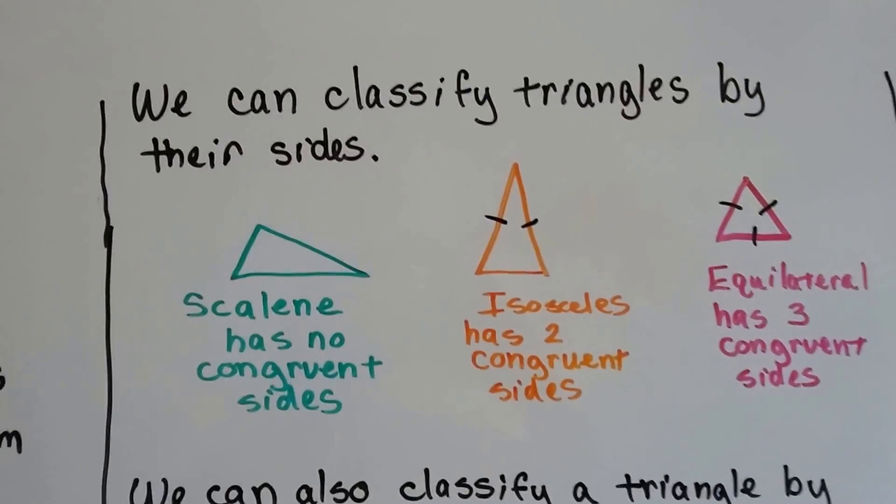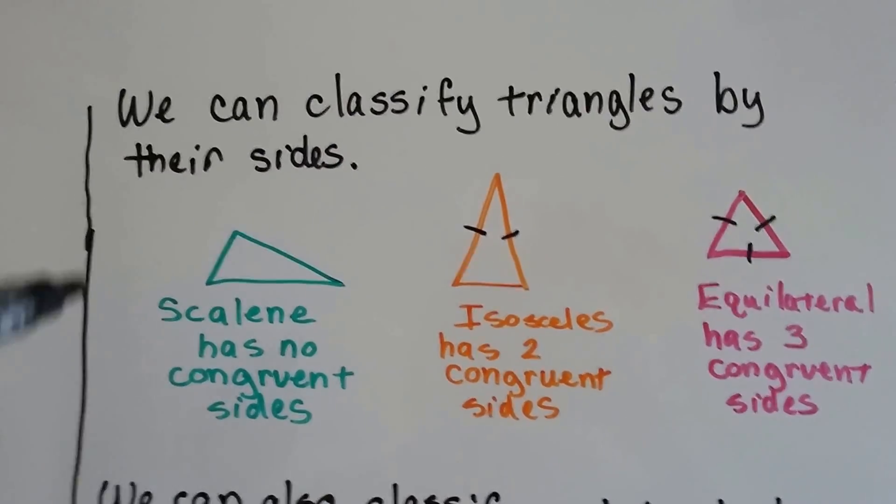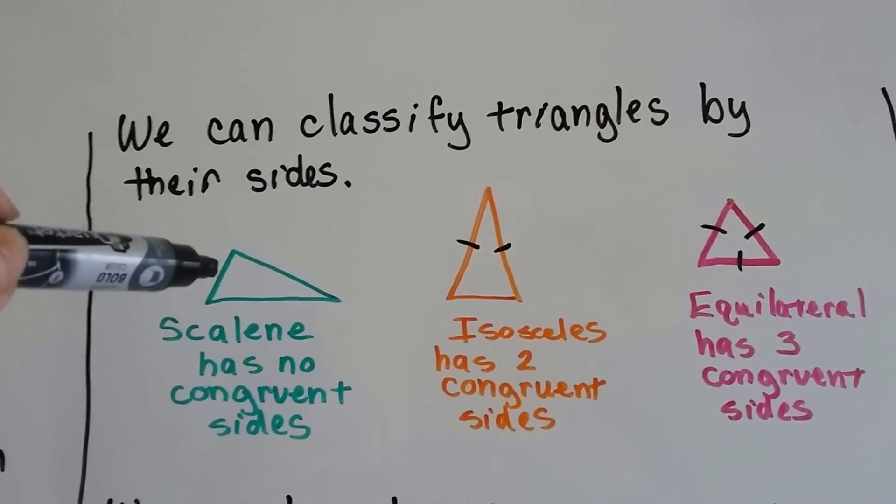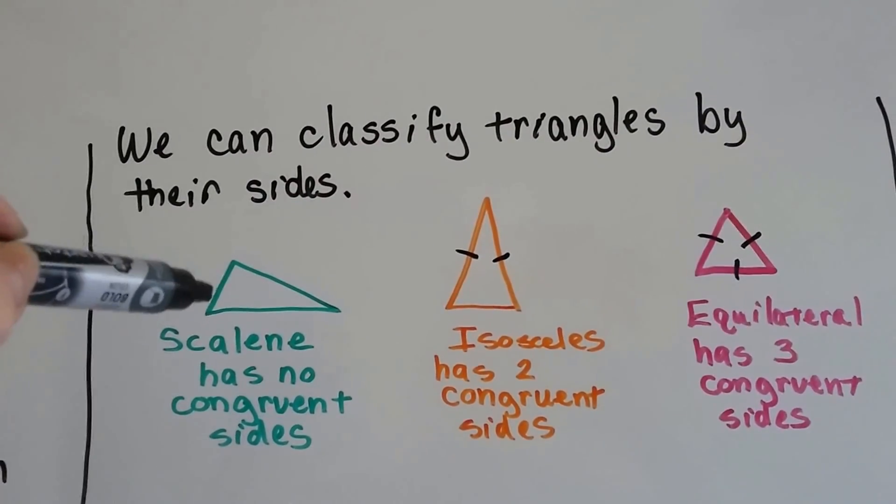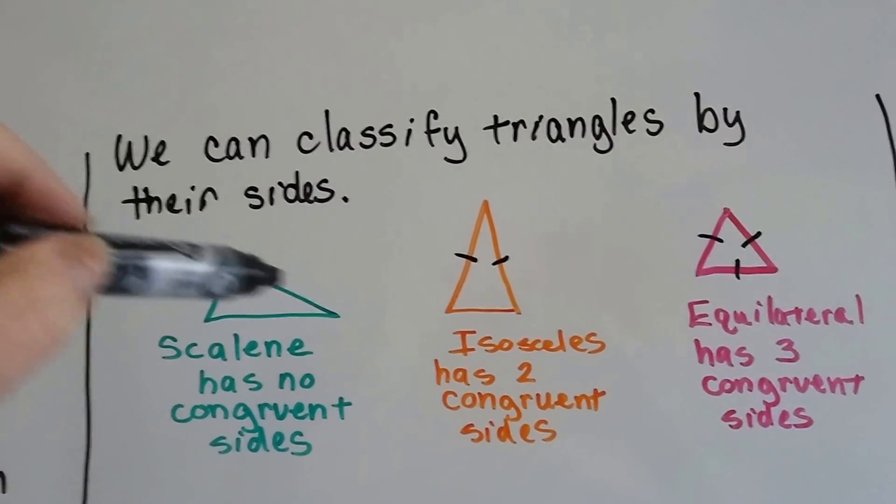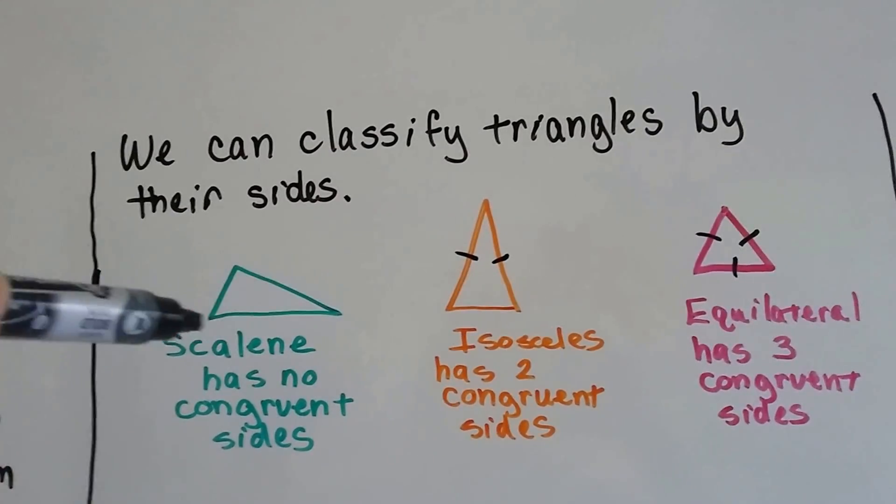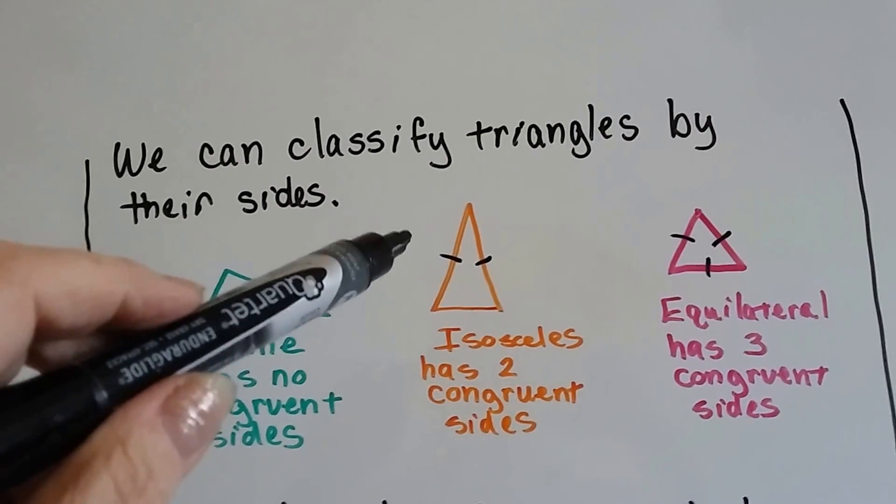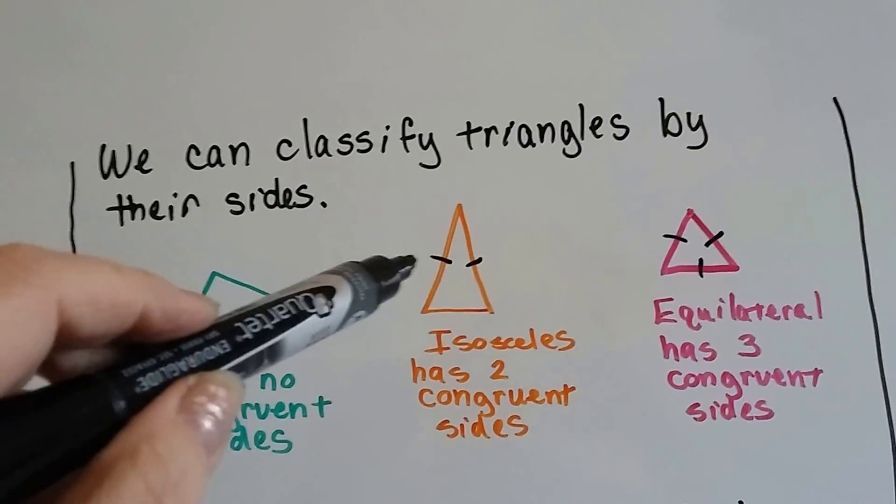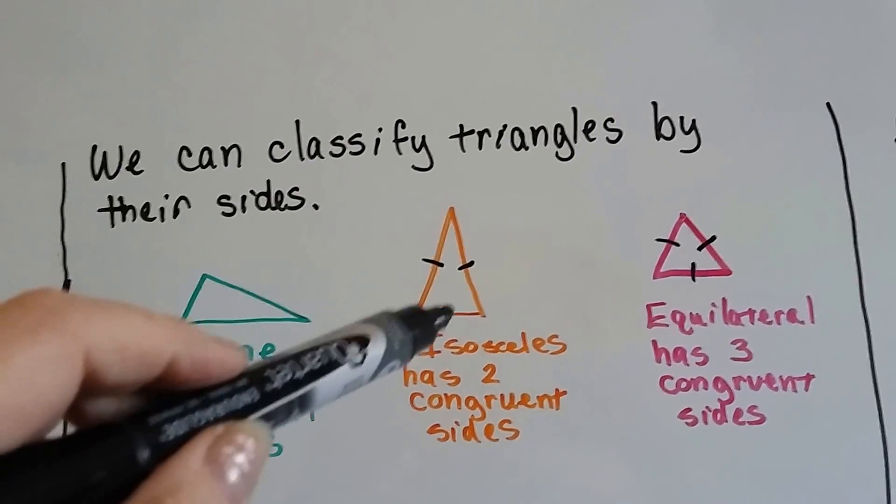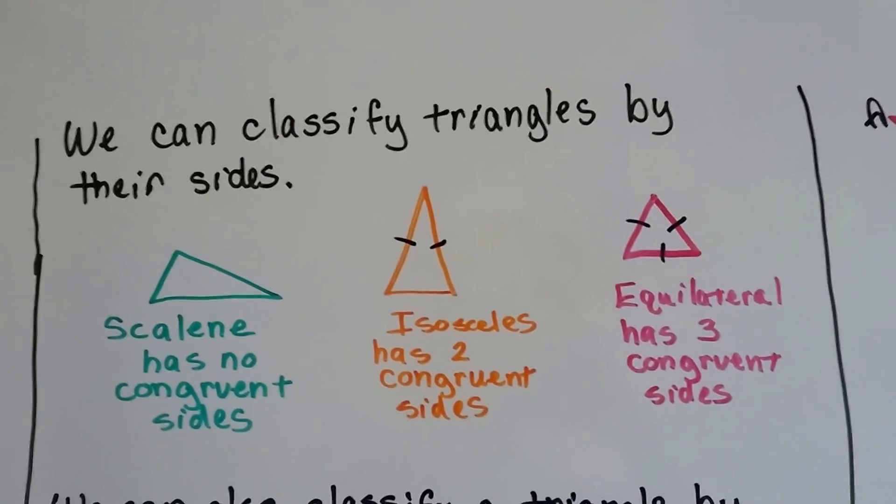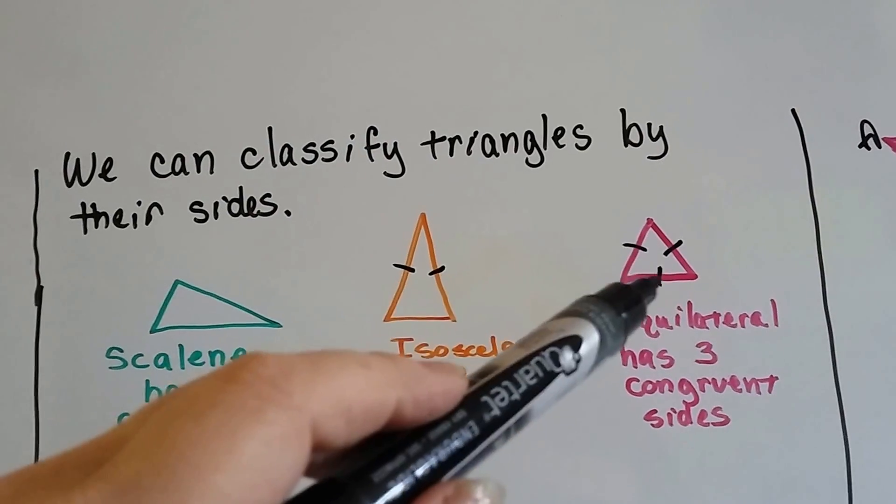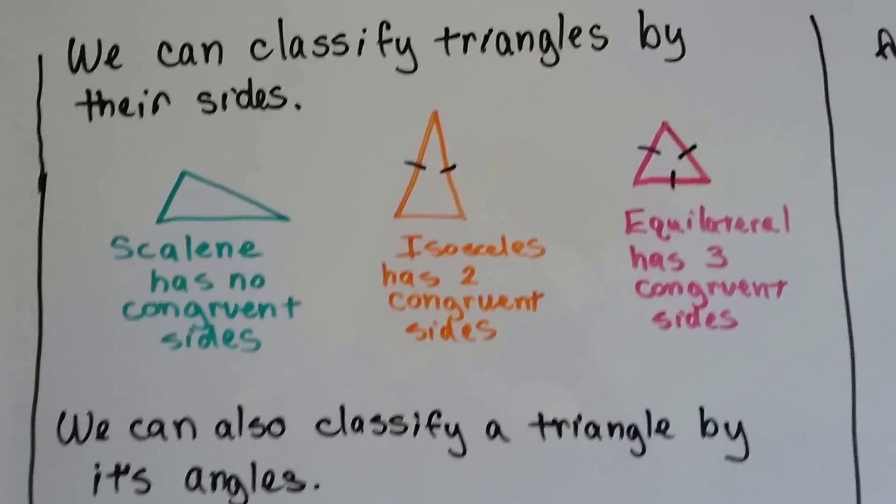We can classify triangles by their sides. A scalene triangle has no congruent sides. This side is maybe an inch and a half, and this one's like three inches, and this one's three and a half inches. They're all different measures on the sides. An isosceles has two congruent sides. These are the exact same size, and then the bottom's a different size. An equilateral has three congruent sides. So if this is two inches, so is this one, so is this one. They're all the same measure.